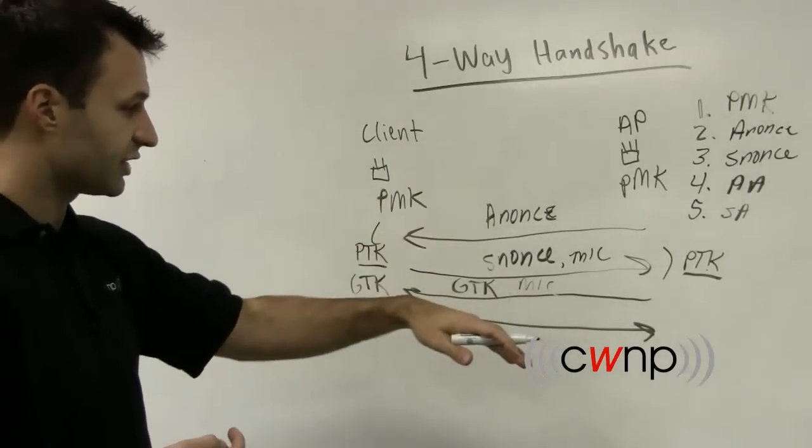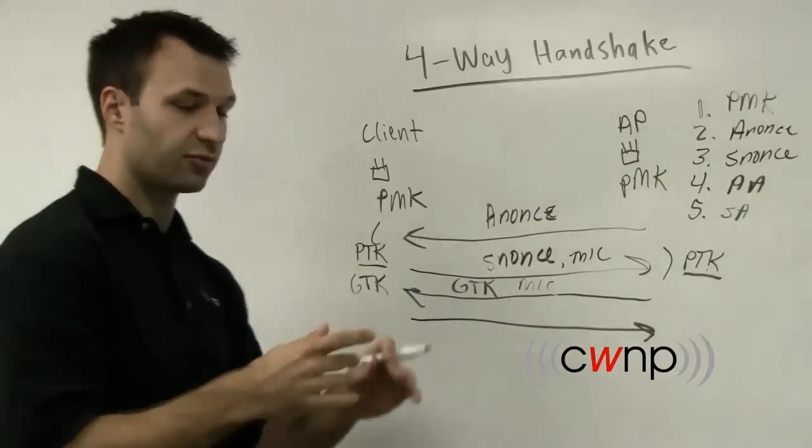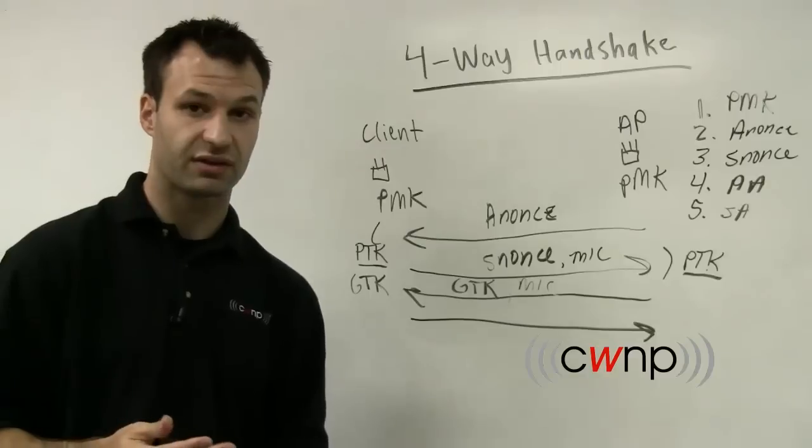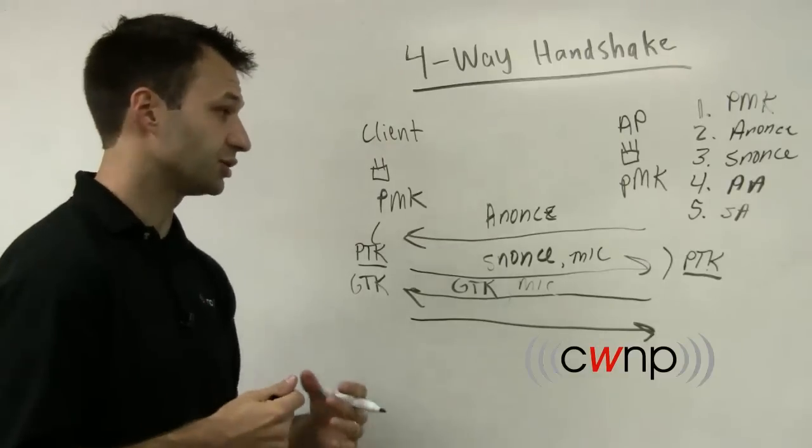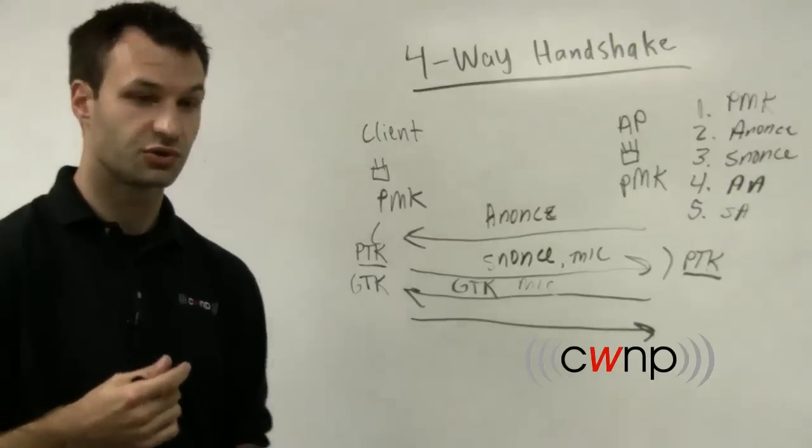So at this point, the whole conversation has taken place. The client and the access point can now encrypt data traffic that's going to pass from the application onto the wireless medium and hopefully to some source address on the network.